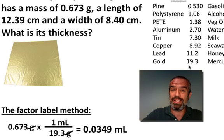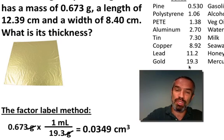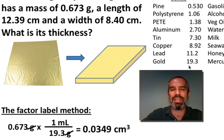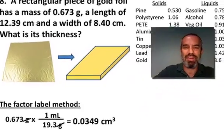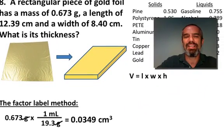Remember, a milliliter is the same thing as a cubic centimeter. So we now know the volume of that. And here's the big trick in this. Knowing that that sheet, that sheet of gold foil, is actually kind of a rectangular block with a very, very, very small height.